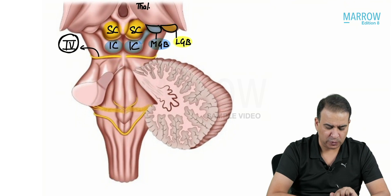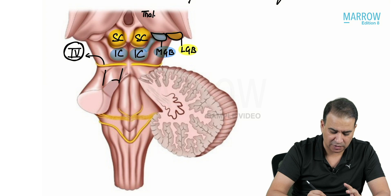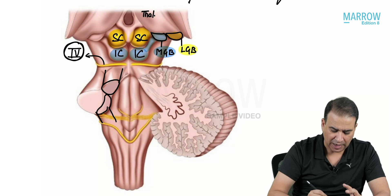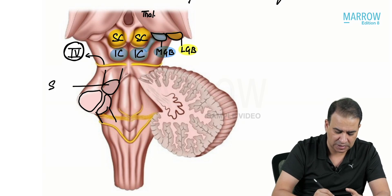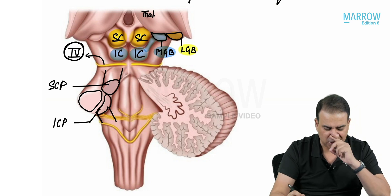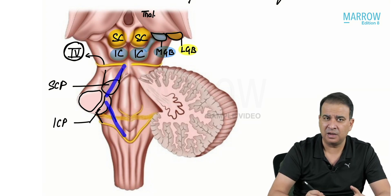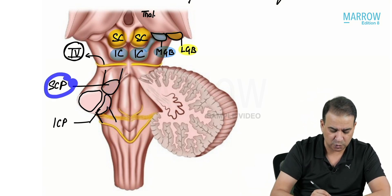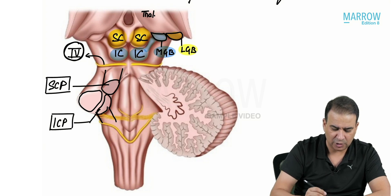Coming to the fourth ventricle: the boundaries of the fourth ventricle are formed by the cerebellar peduncles converging together. You can see the superior cerebellar peduncle converging downward and the inferior cerebellar peduncles going upward. The middle cerebellar peduncle belongs to the pons and is more outside, not contributing to the boundary of the fourth ventricle. It is the superior and inferior cerebellar peduncles that form the boundary of the fourth ventricle.